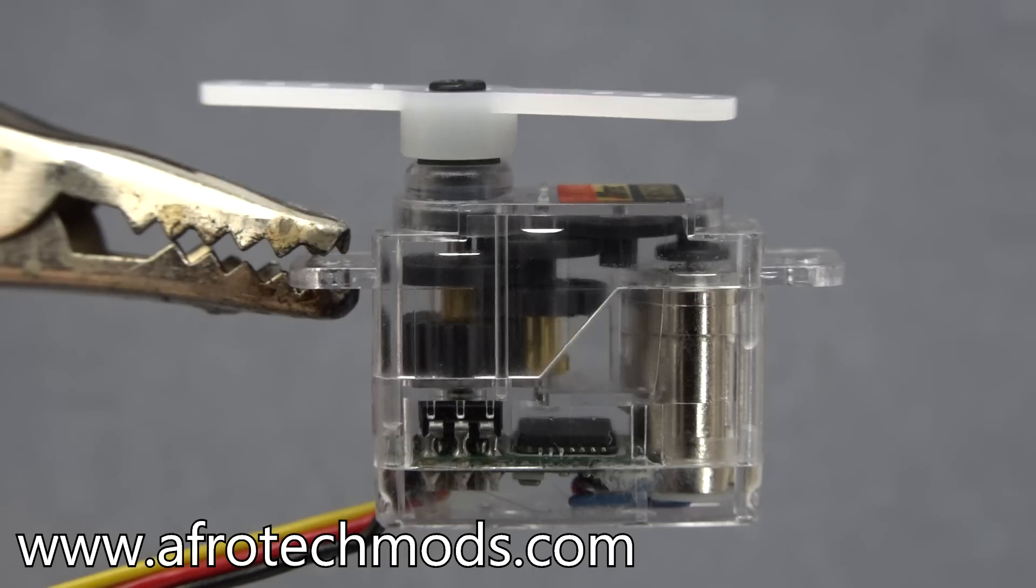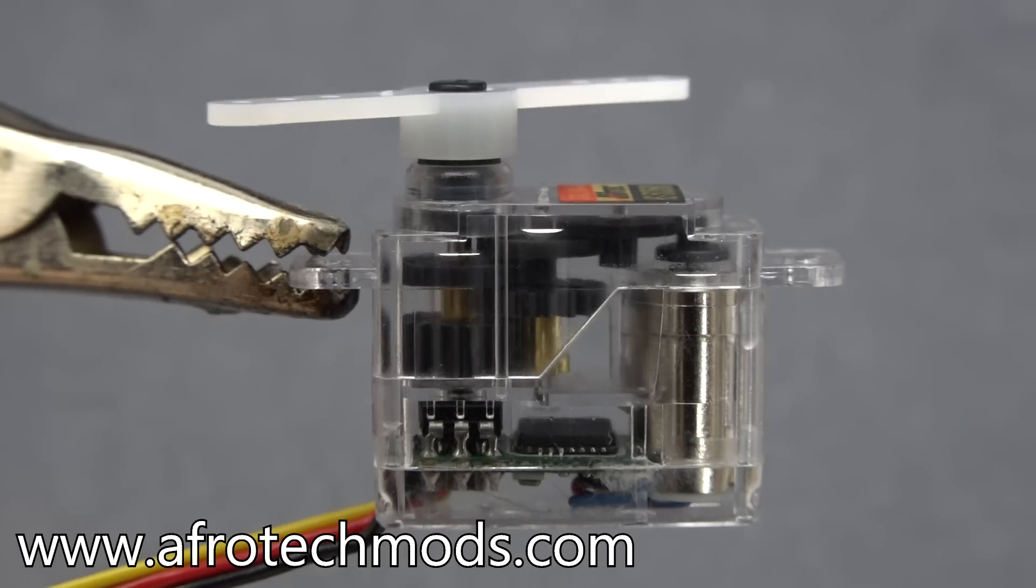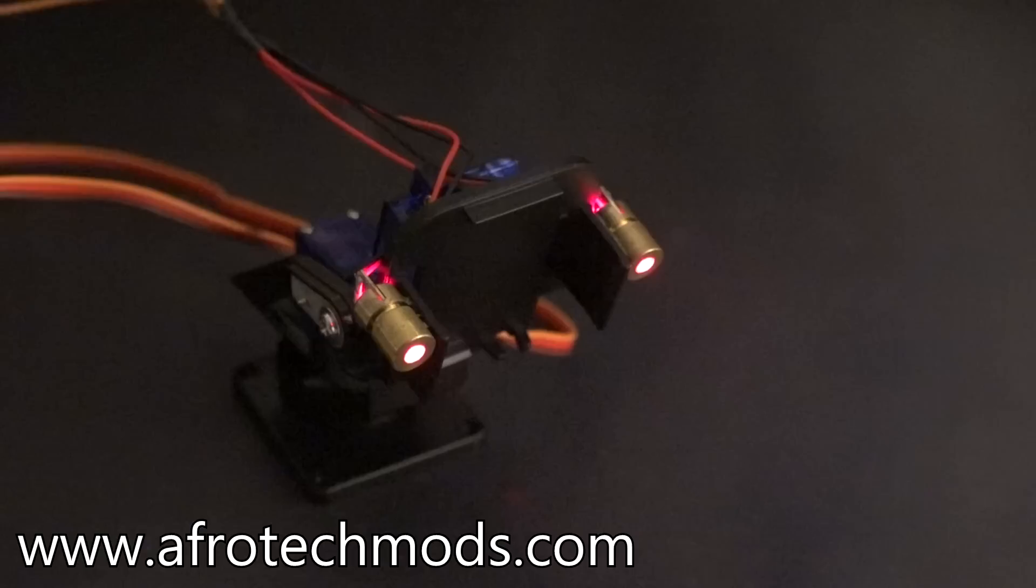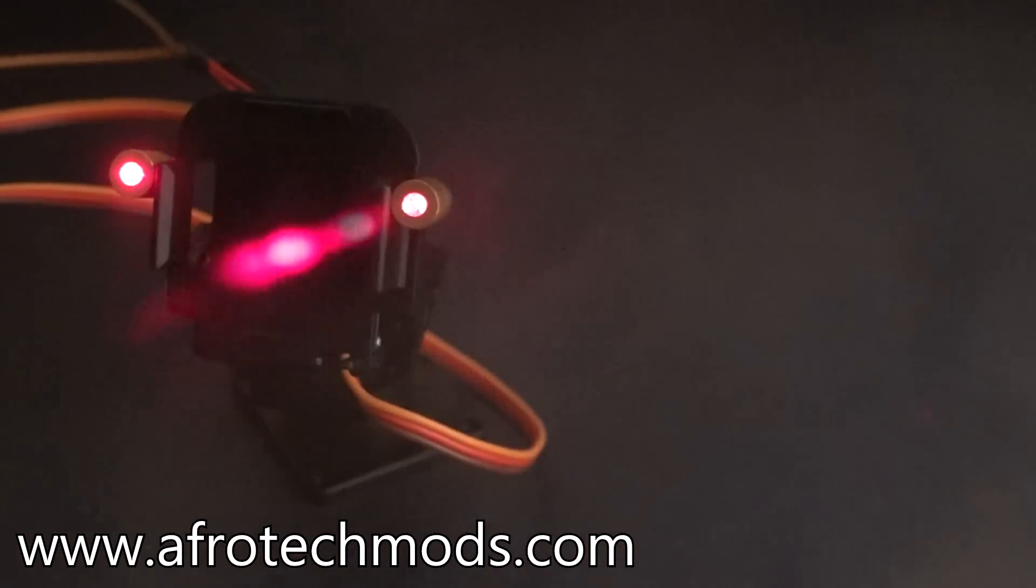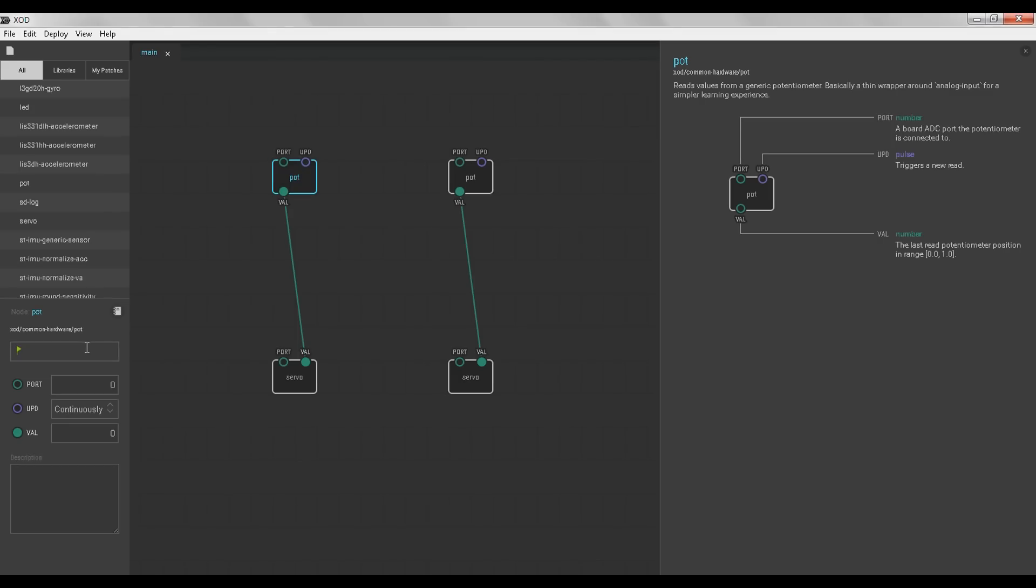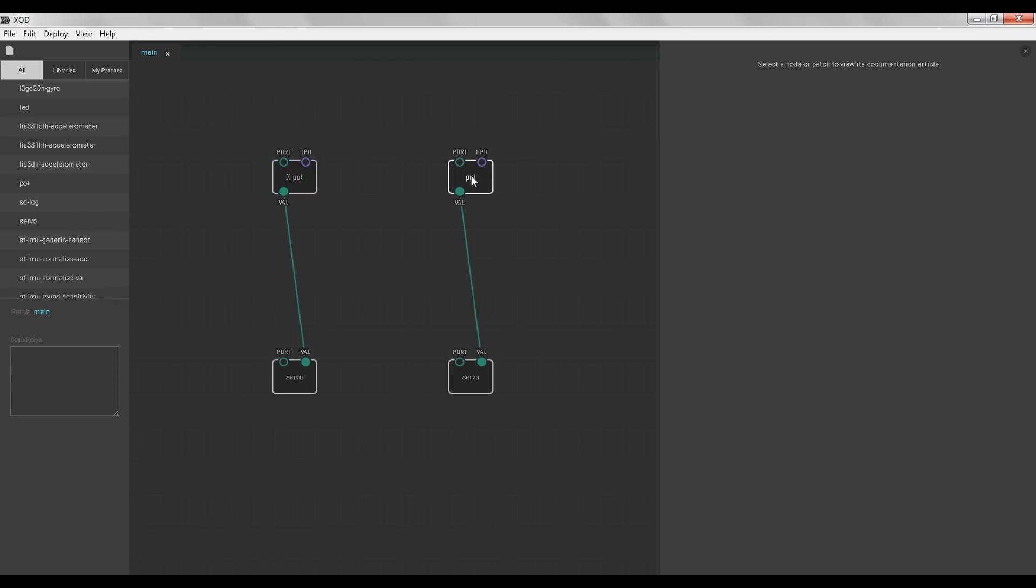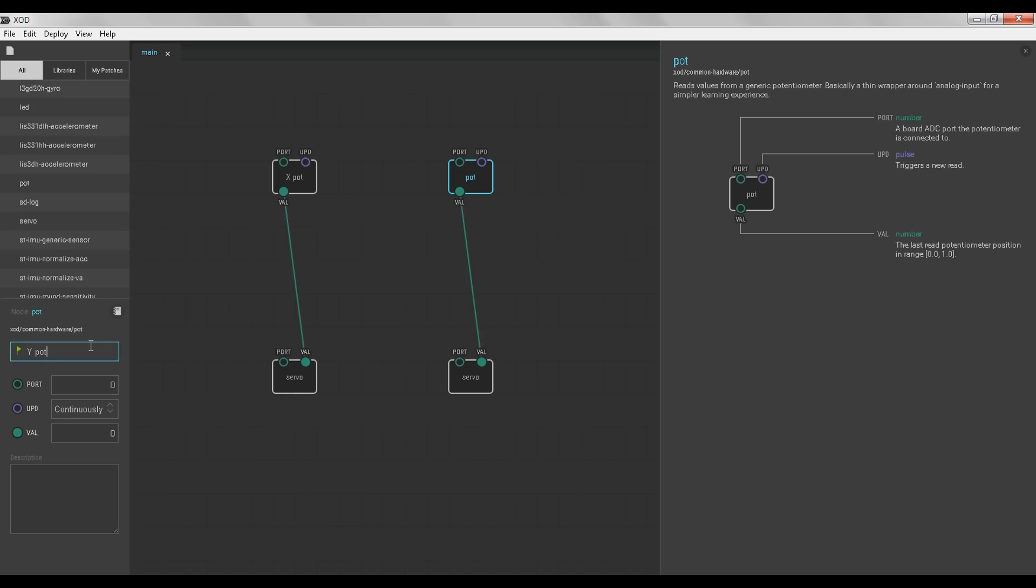In this video, I'm going to teach you about servos: what they are, how they work, and how to use them. Then I'm going to show you a practical example where we make a simple laser turret. Finally, I'm going to show you how to program an Arduino to control the laser turret using a free open source visual programming language called Zode.